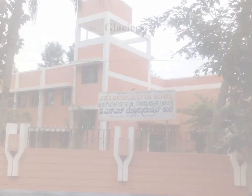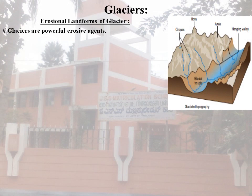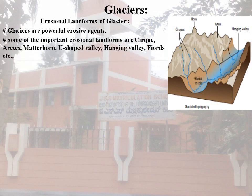The granular transformation of snow into granular ice is called Firn or Névé, and finally it becomes solid glacial ice. We are going to explain the Erosional Landforms of Glaciers. Glaciers are powerful erosive agents. Some of the important erosional landforms are Cirque, Arêtes, Matterhorn, U-shaped Valley, Hanging Valley, and Fjords.